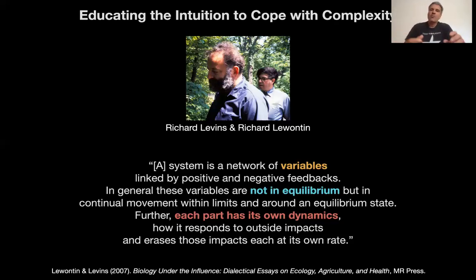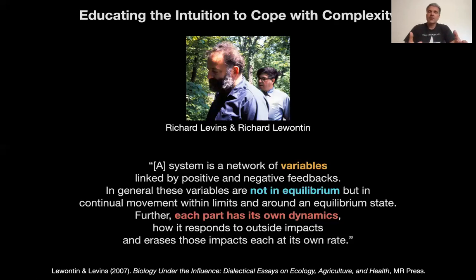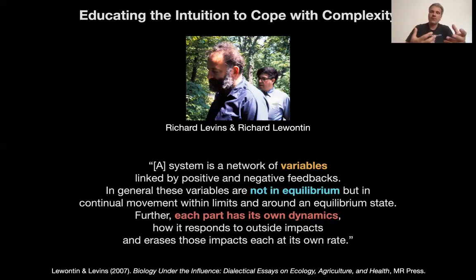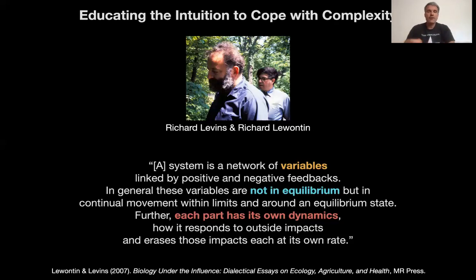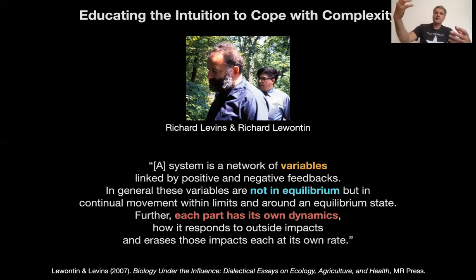But in systems where you have lots of positive and negative feedback loops, this becomes very different, and it becomes very difficult to predict the behavior of the system at its system level from the behavior of the component parts. In addition to this sort of feedback, these variables are usually not in equilibrium, but in continual movement within limits and around an equilibrium state — sort of influenced by what we will later call attractors of a dynamical system, but not quite at the attractor, which is a steady state. It's a form of dynamic equilibrium, and they're constantly in flux.